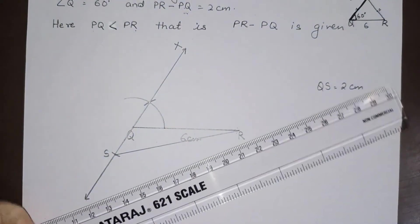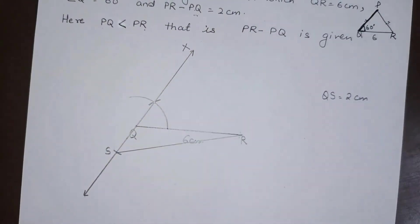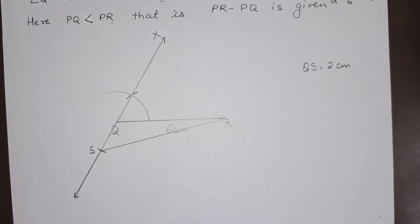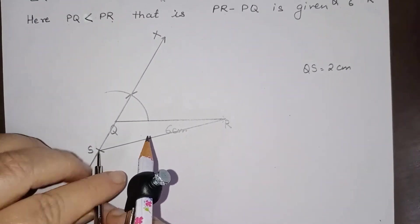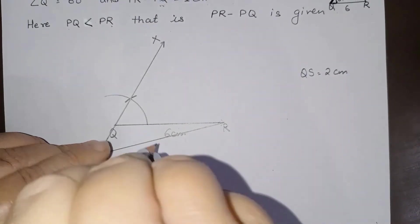And draw perpendicular bisector of SR. So let us draw perpendicular bisector of SR. So one arc here, one arc here.